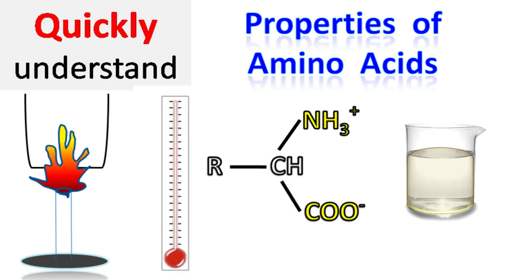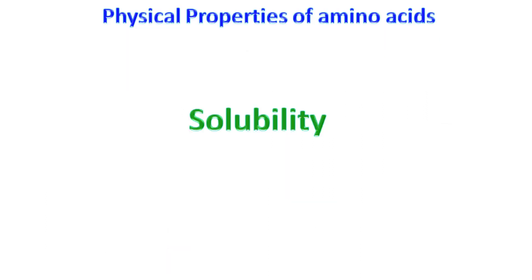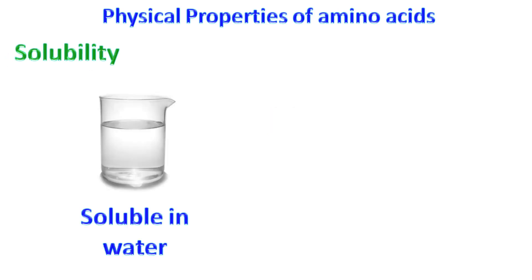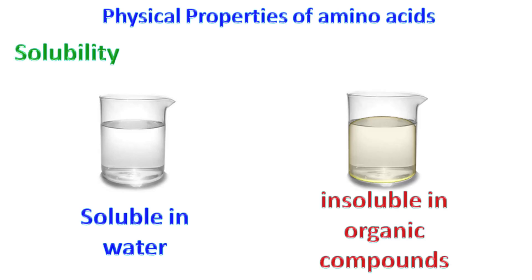Hey everyone, quick back chemistry basics here. Let's talk about properties of amino acids — specifically, the physical properties of amino acids. Amino acids are soluble in water and insoluble in organic compounds.